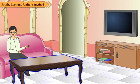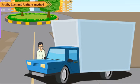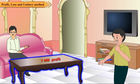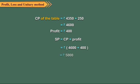Consider the given example. Sanjeev bought a dining table for Rs. 4,350 and spent Rs. 250 on its transportation. After 2 weeks, he sold it to Rajeev, making a profit of Rs. 400. Find the selling price of the table. Here, we first find the actual CP of the table by adding the overhead charges to its price. Since there is a profit, we add the profit to the CP to get the selling price.